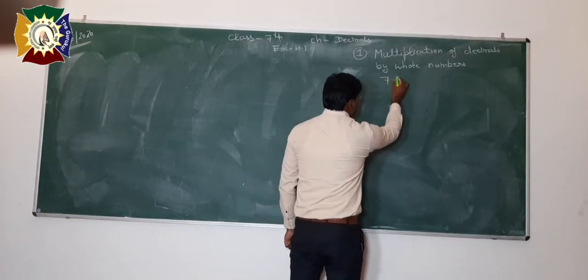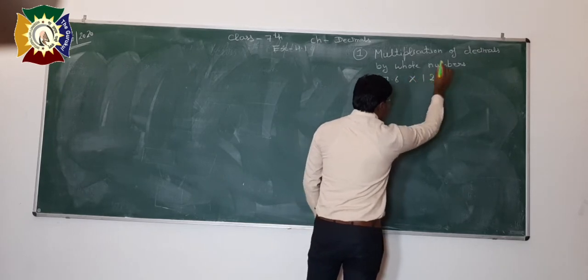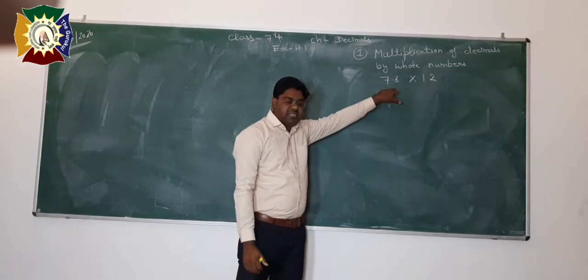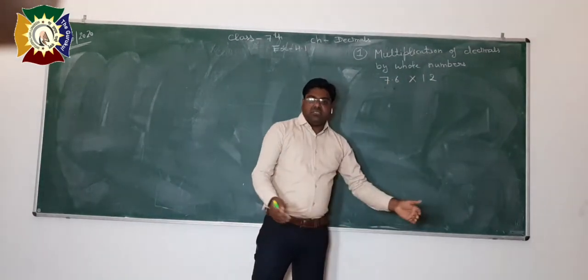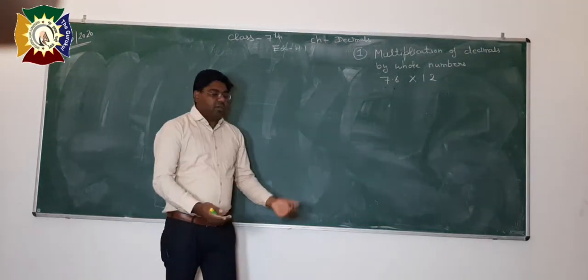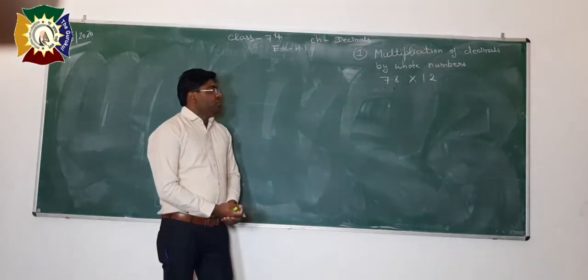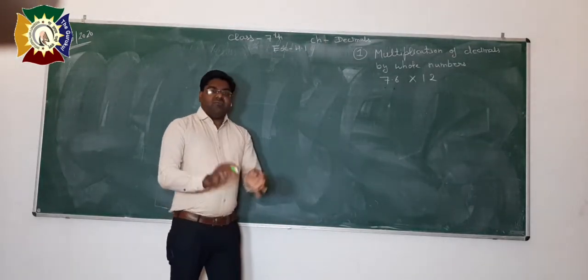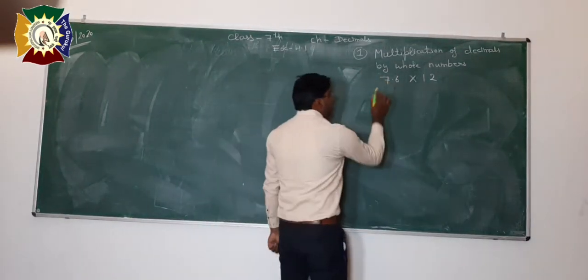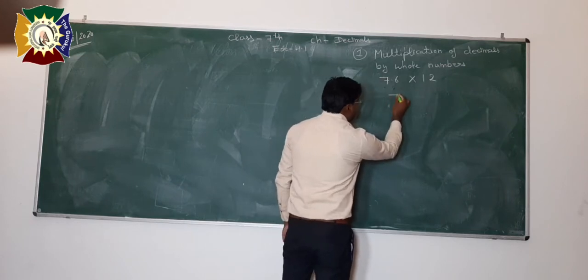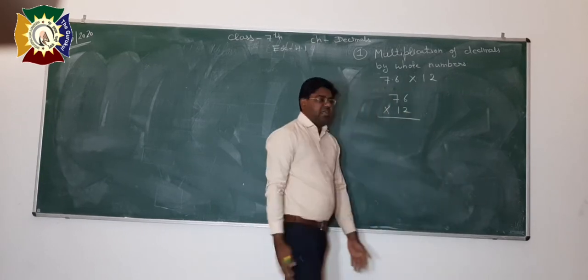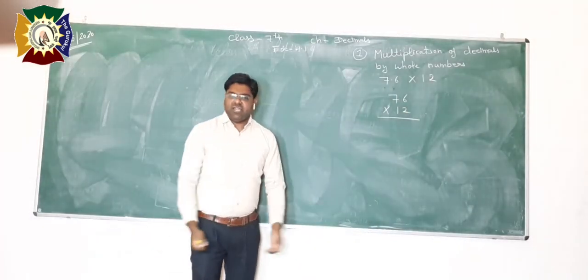Here we are taking the example: 7.6 multiplied by 12. You can see 7.6 is a decimal number and 12 is the whole number. It is a very simple way to find their product. First of all, we have to do simple multiplication without considering the decimal part. So 7.6 multiplied by 12 — this is a very simple multiplication, we can do it very easily.